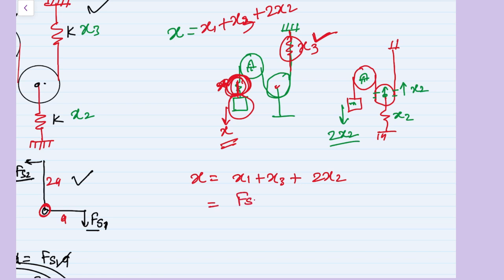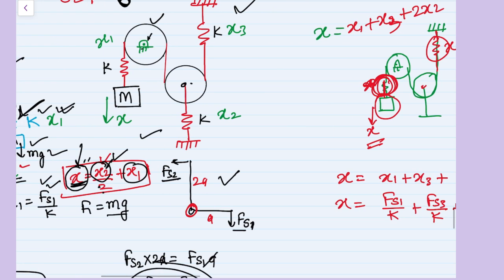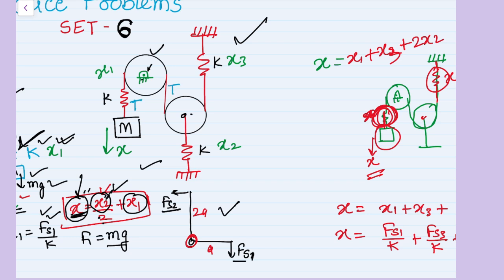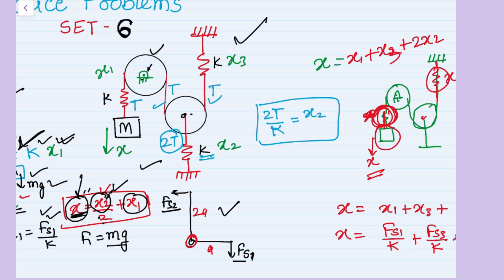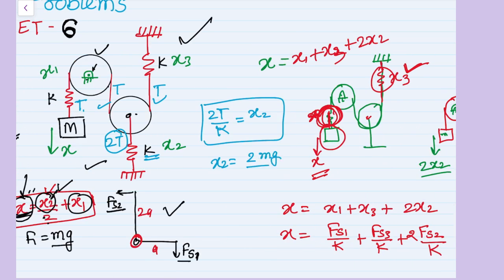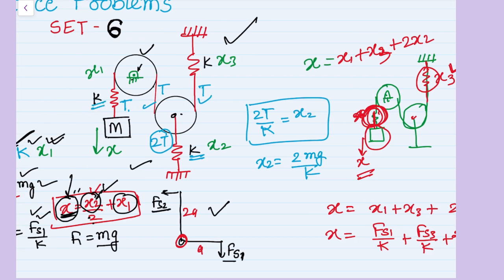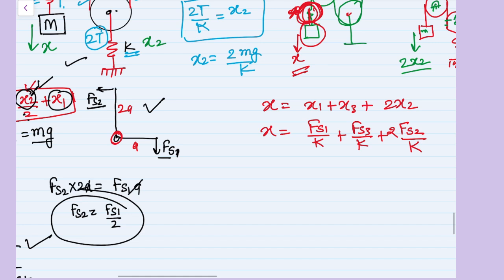Converting displacements to forces: x equals Fs1 over k1 plus Fs3 over k3 plus 2 times Fs2 over k2. Letting the string tension be T, all segments of string carry tension T, while the moving pulley spring carries force 2T (both sides balance). The force in that spring is 2T divided by k. Since T equals mg, we get x2 equals 2mg over k. The forces in the first and third springs are each mg, so x1 equals mg over k and x3 equals mg over k.